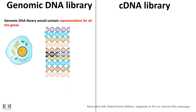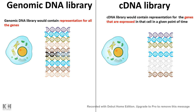A genomic DNA library would contain all the representation of all the genes of a particular cell, but a cDNA library would contain all the genes that are expressed at a given point of time under given circumstances.